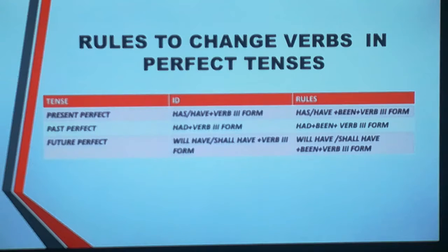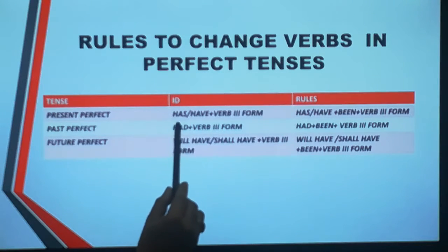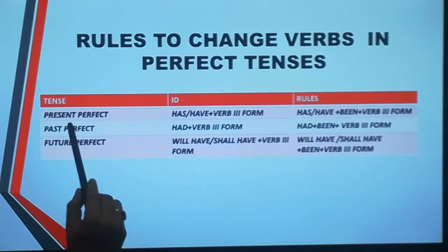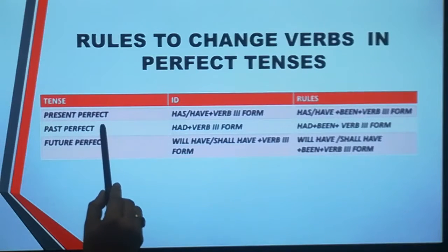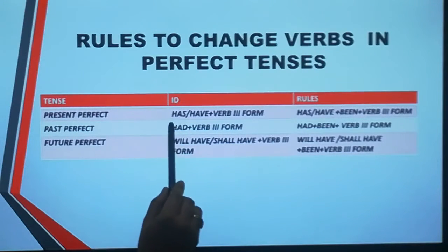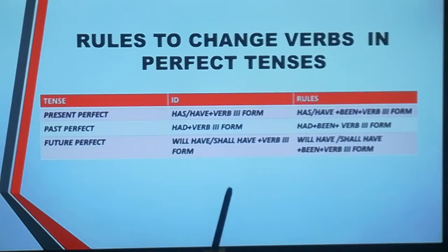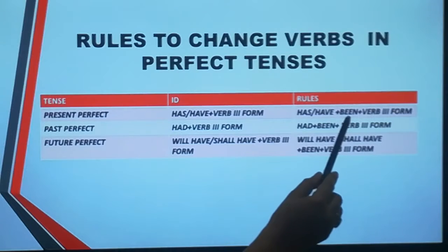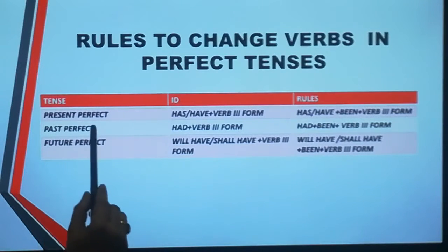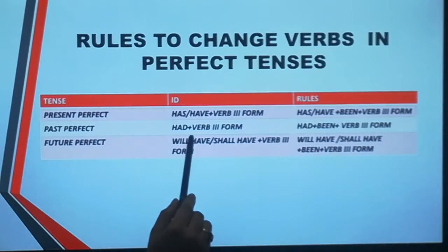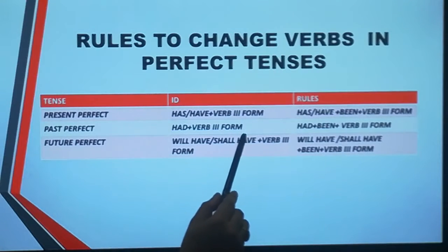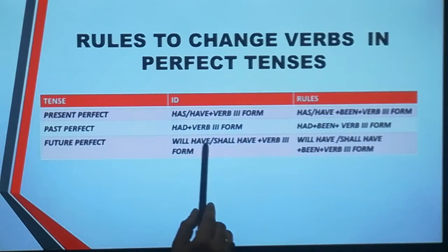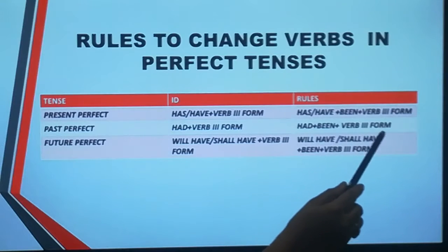As students, you can see that we have 'has' or 'have' plus the third form of the verb in present perfect tense. For transforming this verb into passive voice, we have to add 'been'. In past perfect tense, there is 'had' plus the third form of the verb, and in the rule we have just to add 'had been' plus the third form of the verb.